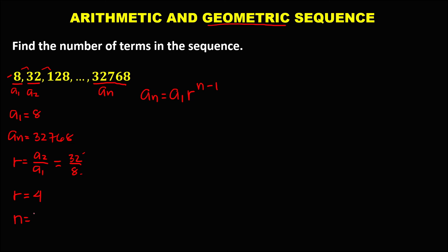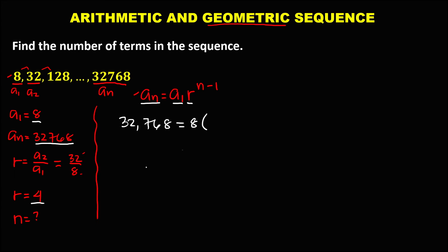To find the number of terms for this geometric sequence, substitute all the values into the formula. So we have 32,768 equals a sub 1, which is 8, times the common ratio 4, to the power n minus 1, where n minus 1 is the unknown.